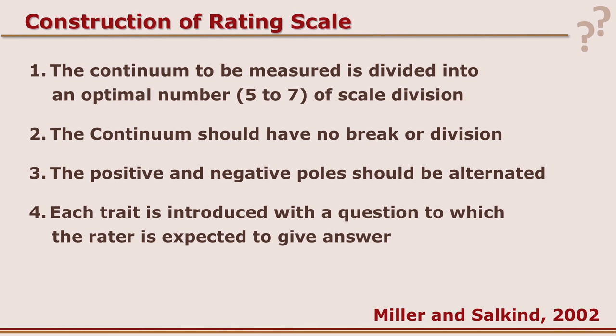To construct a rating scale, start with the continuum to be measured and divide it into an optimal number of points, deciding between a 5 point or 7 point scale. The continuum should not have a break — the word continuum means continuity. There are two poles, positive and negative, which need to be alternated. We cannot have all positive statements; there should be some negative and some positive so that the rater does not develop a mindset to rate at a particular point.